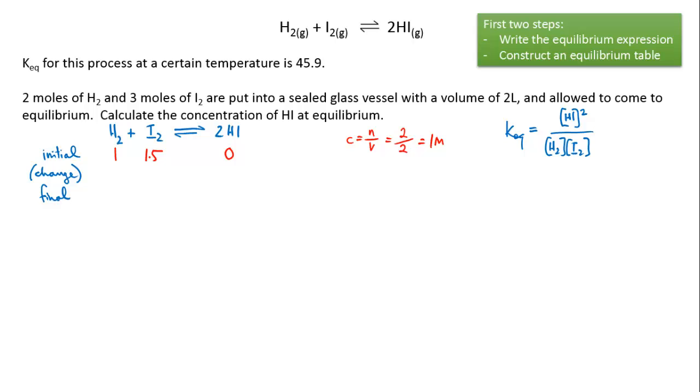We're not told how much of any of the species is formed at equilibrium, so we start using the tables with a variable like x. Let's say that x amount of hydrogen is used up, so the equilibrium concentration of hydrogen will be 1 minus x. There's a one-to-one ratio between hydrogen and iodine, so if x moles per liter of hydrogen is used then x moles per liter of iodine must also be used, so at equilibrium we have 1.5 minus x for iodine.